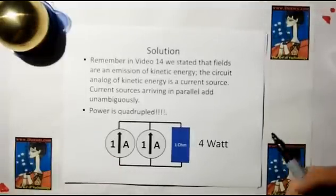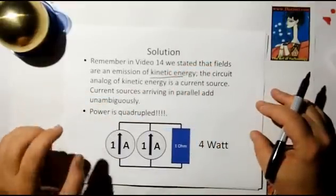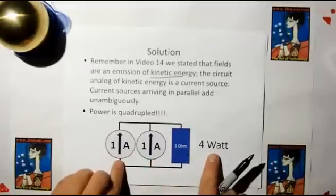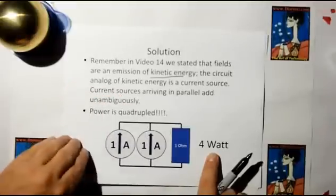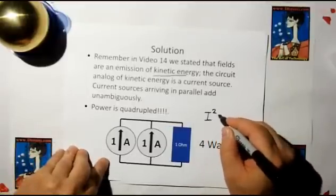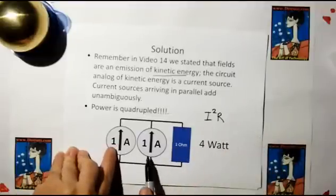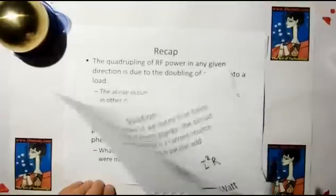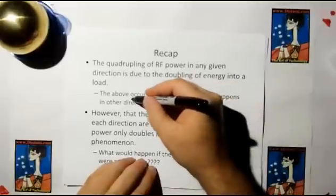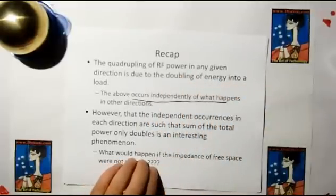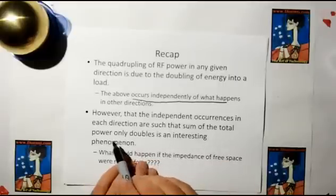If you remember video 14, we stated that fields are an emission of kinetic energy. The circuit analog of kinetic energy is a current source. So current sources can arrive in parallel to give us the quadrupling of power that we desire. Because you've got one amp into one ohm, that's one watt. Two amps into one ohm is four watts. Because the relationship is I squared R. So 1 times 1 is 1. 2 squared times 1 is 4. So the quadrupling of power in any given direction is due to the doubling of energy into a load. The above occurs independently of what happens in all other directions. But the interesting thing is that the independent occurrences in each direction are such that the sum total power only doubles.